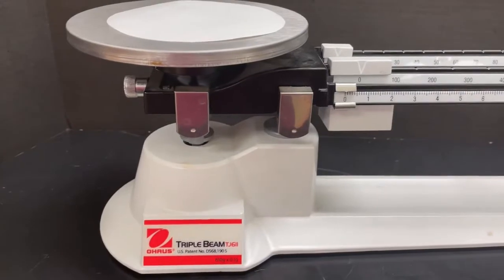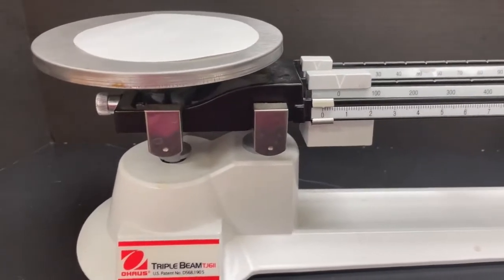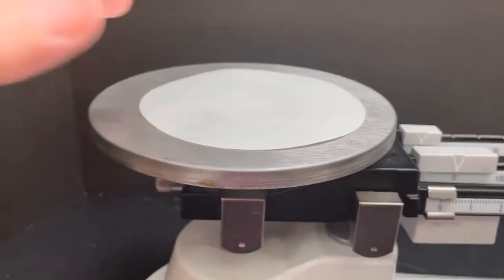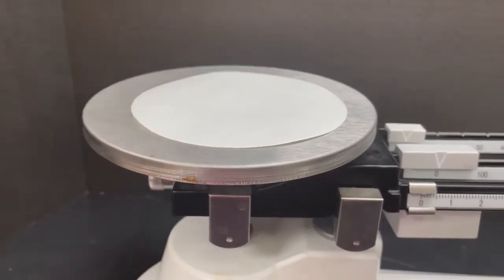This video is about how to use the triple beam balance. First of all, we put a piece of filter paper on the top to protect the tray.